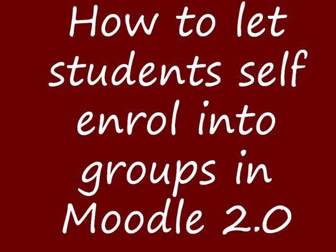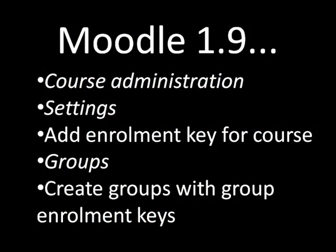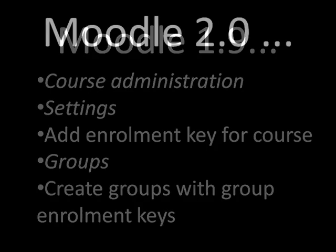This video will show you how you can get students to enrol themselves into groups in a Moodle 2 course. In Moodle 1.9 you added an enrolment key in the course administration settings and then created groups with group enrolment keys. In Moodle 2, enrolment works differently and so the process is different. Let's take a look.